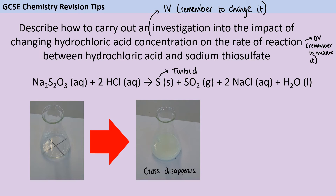We can use the turbidity to work out the change in rate, because we do this reaction over a cross and look for the cross to disappear. We assume it takes the same amount of sulfur every time to block out the cross, so the longer it takes to produce that amount of sulfur, the slower the reaction is.